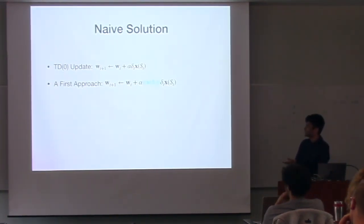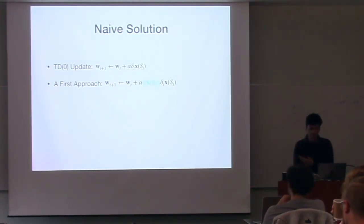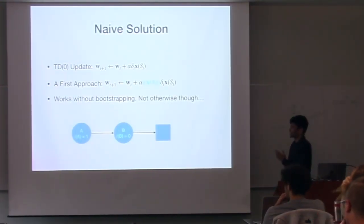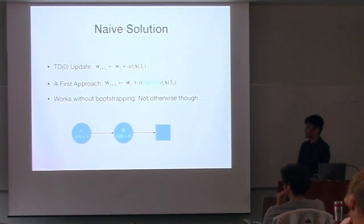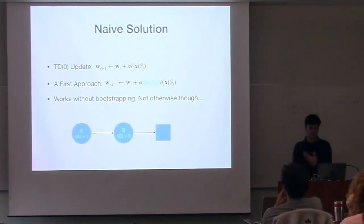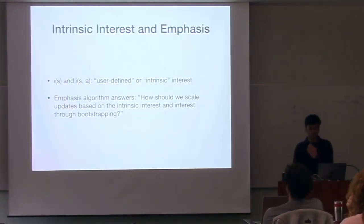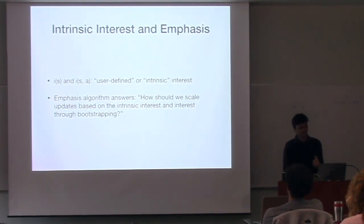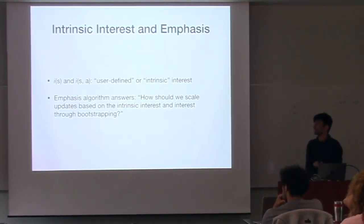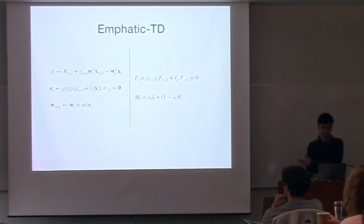A nice solution would be to start from TD and just add this interest to basically scale our update. But this doesn't quite work. A simple example: if you use bootstrapping, if you care about state A but you don't care about state B, then if you use bootstrapping because A cares about the value of state B - that's how TD works - it doesn't quite work. So you would have to also include interest through this bootstrapping process. You essentially have the intrinsic interest that you have over a state or state-action pair, and then this other interest that comes through bootstrapping, because a previous state cares about the current state.